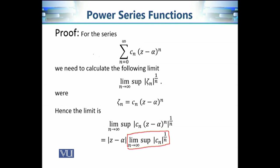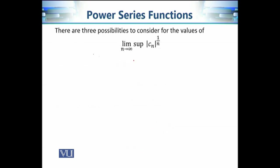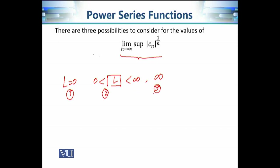This gives us the expression of interest for finding the conditions on Z under which the series converges or diverges. There are three possibilities when we calculate this expression: it could be infinity, it could be some finite number L between 0 and infinity, or it could be 0. This gives us three cases to discuss one by one.